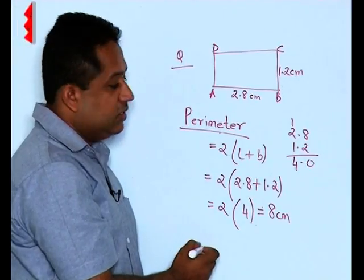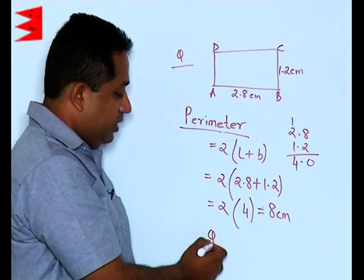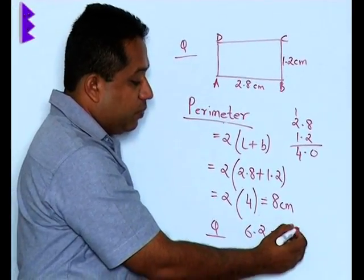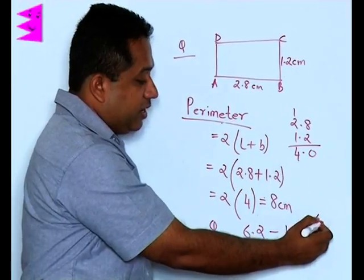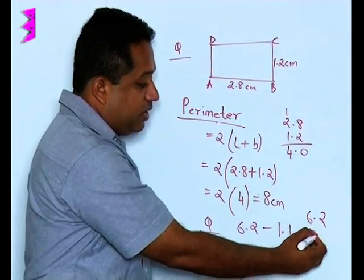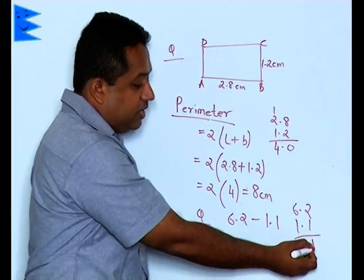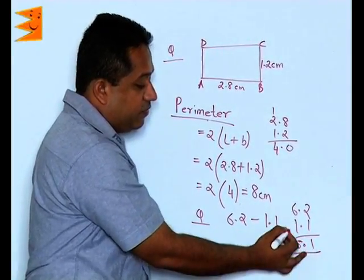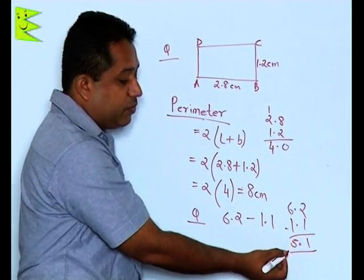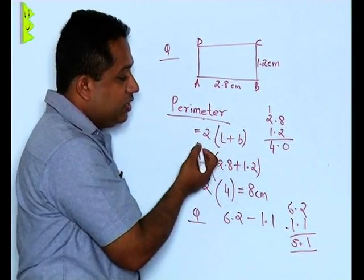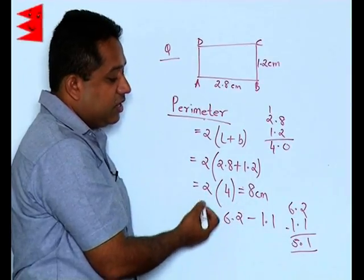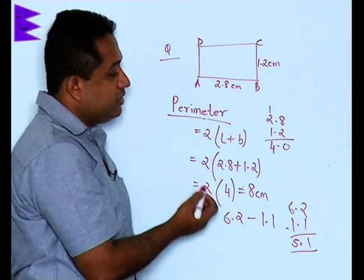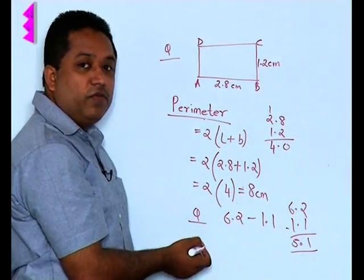In the same way, we can also subtract decimals. For example, subtract 6.2 minus 1.1. We write 6.2 and 1.1, then subtract: 2 minus 1 is 1, and 6 minus 1 is 5, giving us 5.1. So addition and subtraction of decimals are quite simple. Multiplication and division we have already seen, and all these operations can be used in various problems.